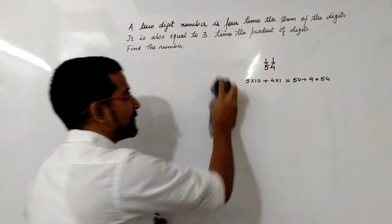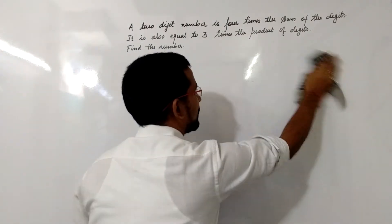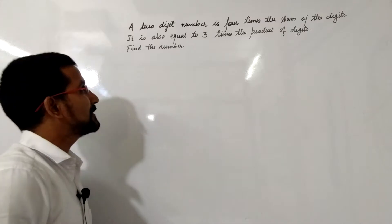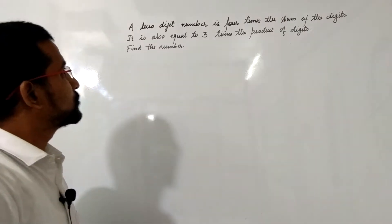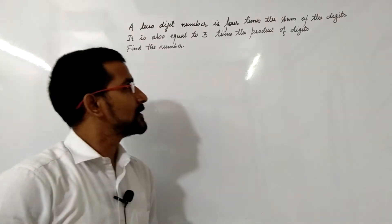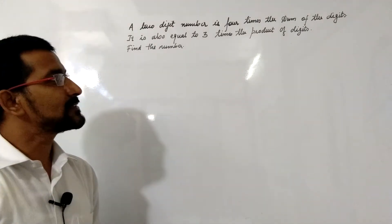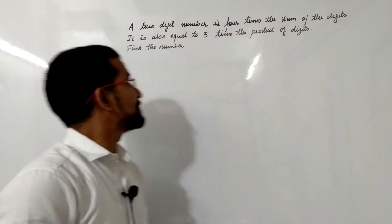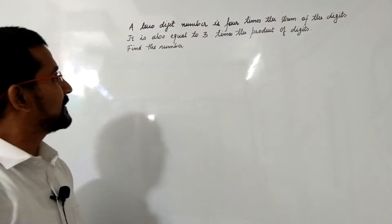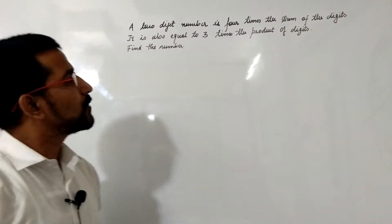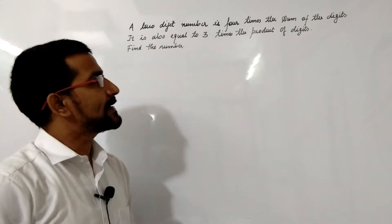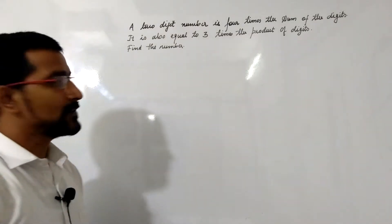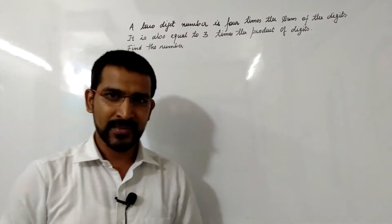We will take one example. The given problem is: a two-digit number is 4 times the sum of its digits, and it is also equal to 3 times the product of its digits. Find the number.